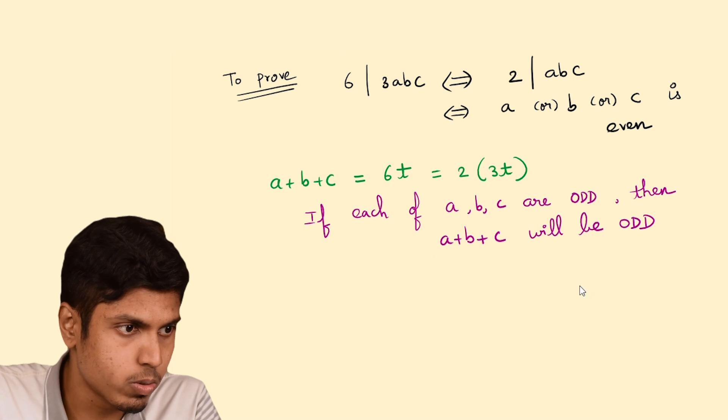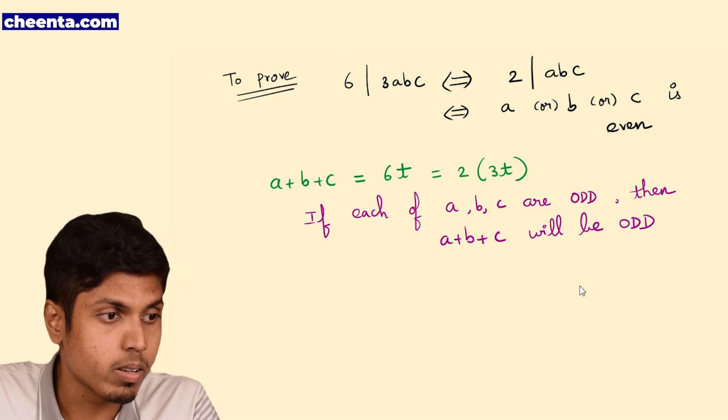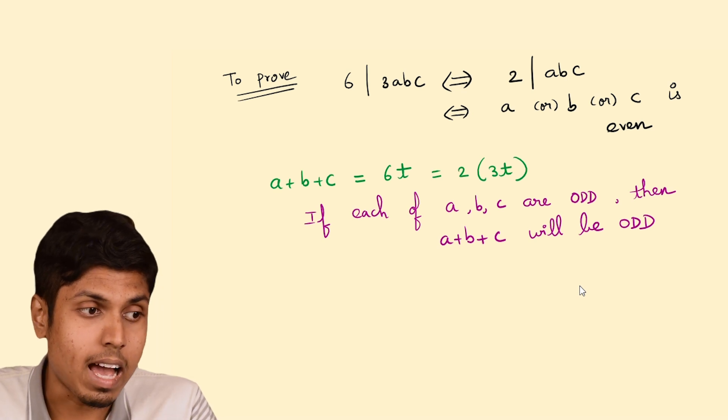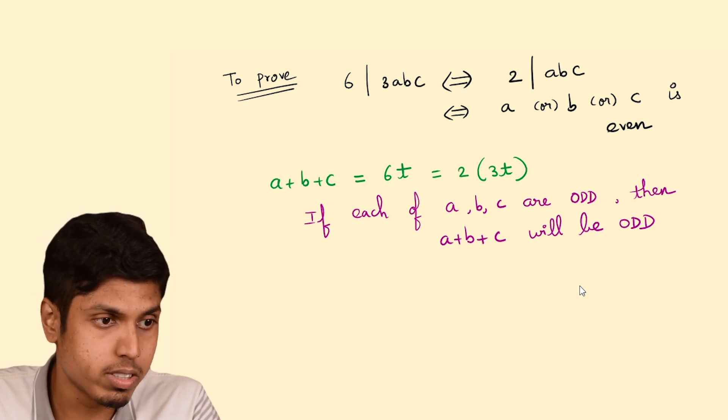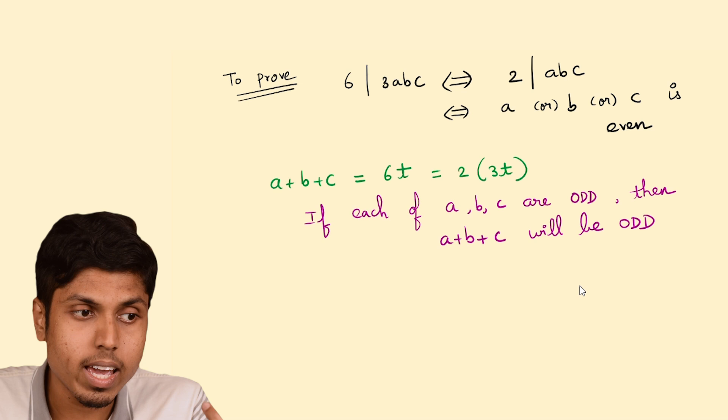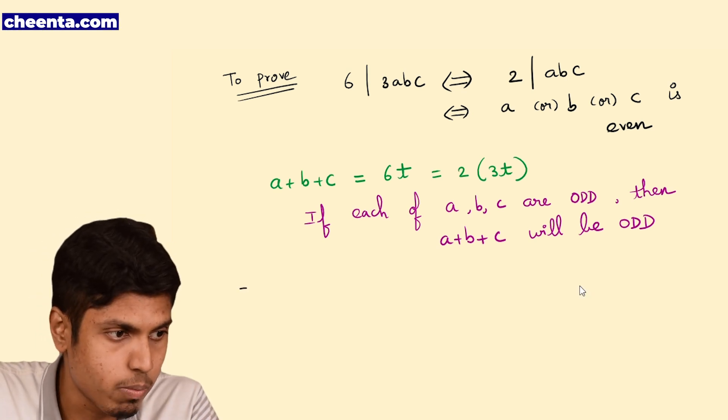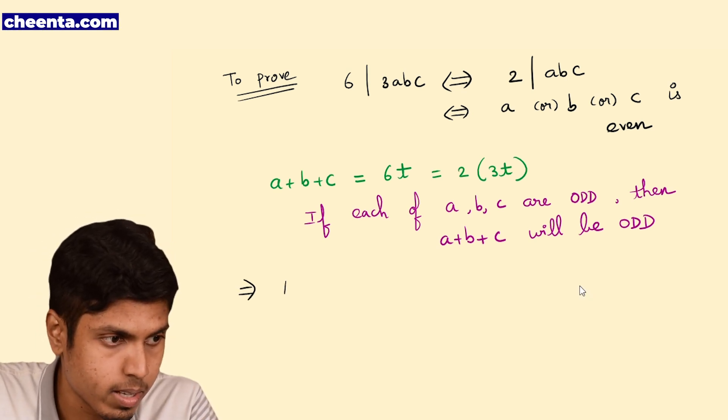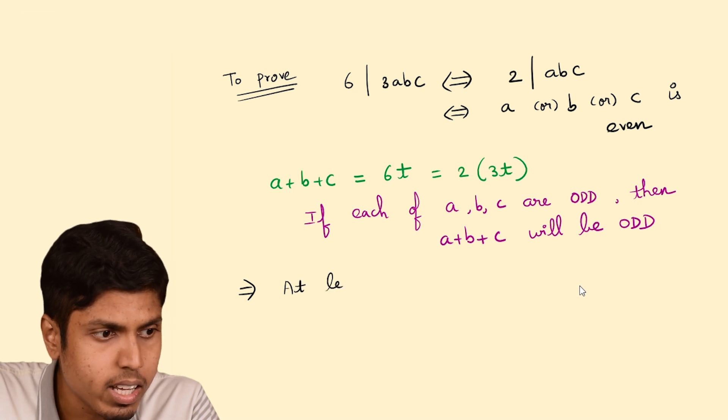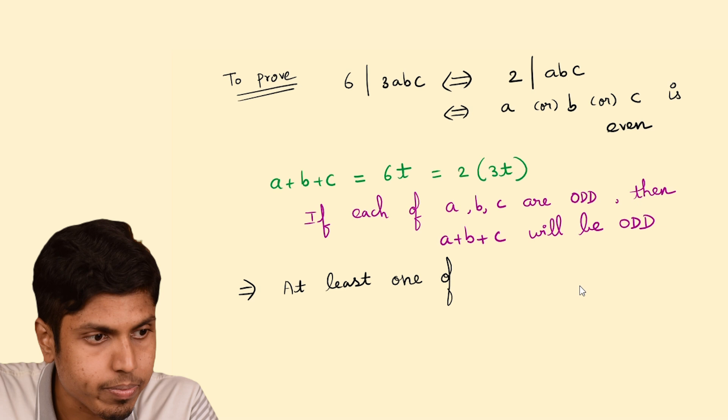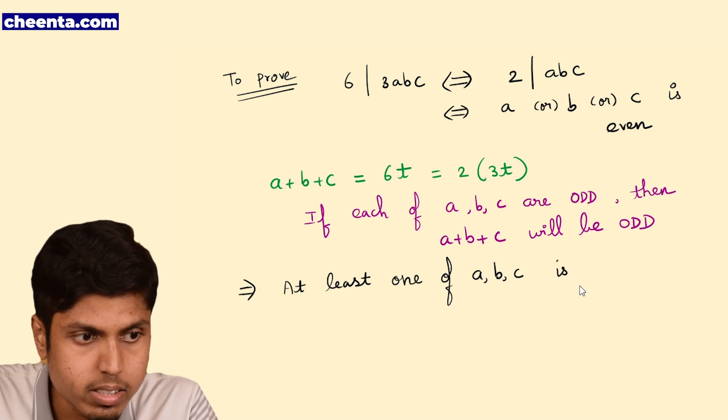So since we arrive at a contradiction, we have to disregard or condemn the actual hypothesis which is each of A, B, C are odd. So we then imply that at least 1 of A, B, C is even.